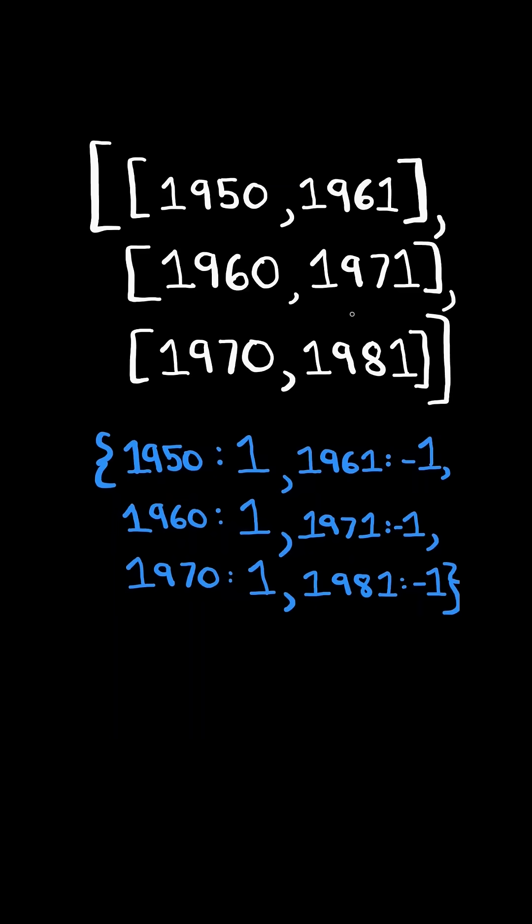First, we iterate through the array and create a hash map where we increment all birth years by 1 and decrement all death years by 1.